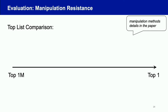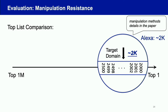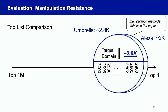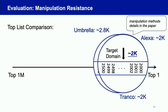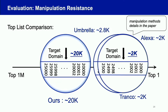For the manipulation method details, you can check our paper. For Alexa, we can easily get into about rank 2,000. Similarly for Umbrella, we can easily get a ranking around 2,800. For Tranco, using a daily version that combines Umbrella and Alexa, we can get a ranking around 2,000. In contrast, using the same attack on our list, attackers can only achieve about rank 20,000. So our list is actually much more robust compared to those existing lists.